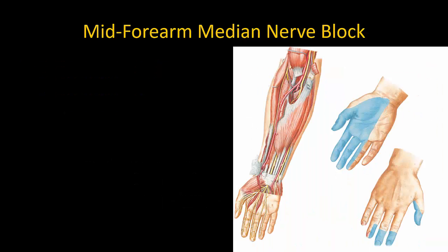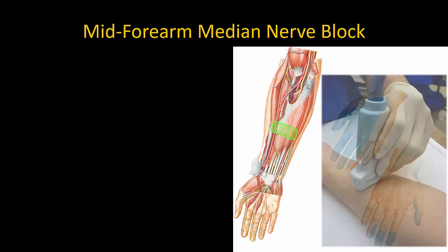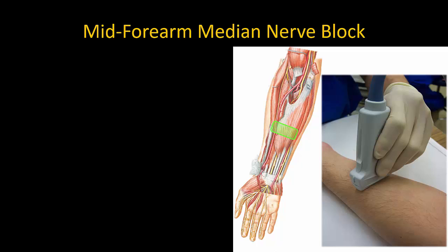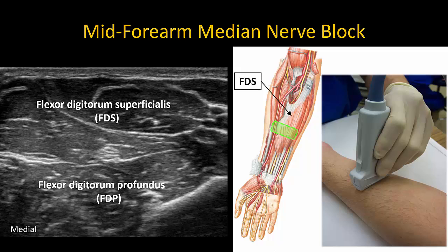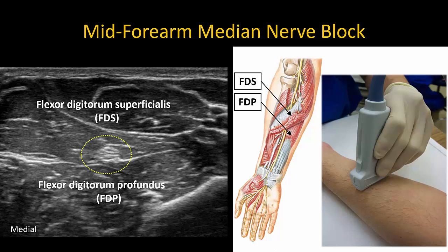Let's start with the mid forearm median nerve block. Position the patient's arm supinated at the elbow to expose the ventral surface of the forearm and place the probe in a transverse orientation on the fleshy ventral part of the mid forearm. At this location the median nerve is always sandwiched between the flexor digitorum superficialis and flexor digitorum profundus muscles. The nerve can be anisotropic, so tilt the probe back and forth as needed to light it up.